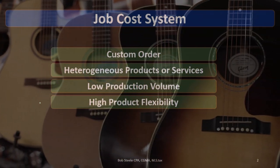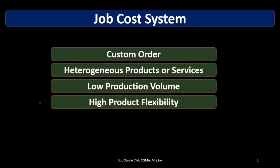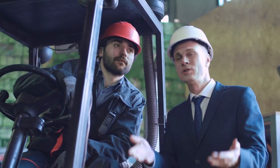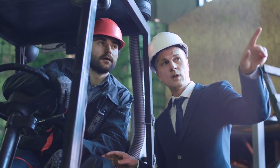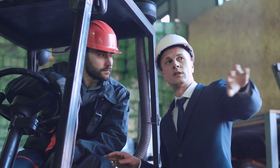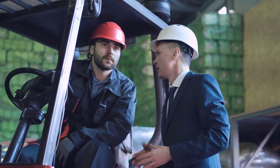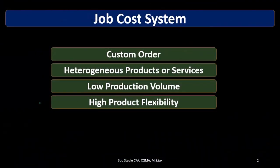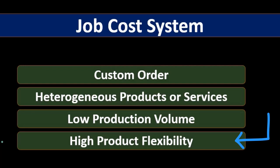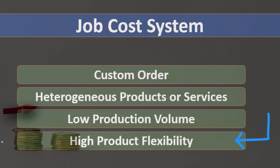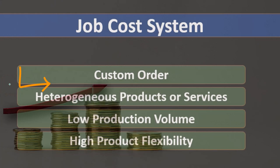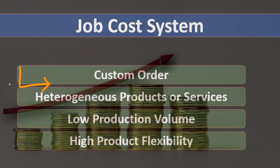In construction, even if we specialize in the same type of work, the jobs we deal with are typically different by nature, so we need flexibility. A job cost system will also typically have higher dollar values for the product, because customization takes more time and costs more — as opposed to producing everything the same, where the goal is to lower costs.